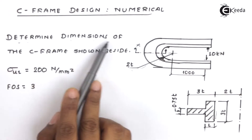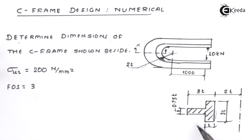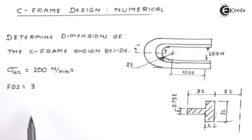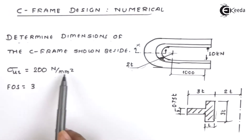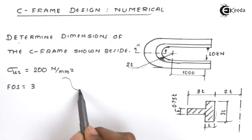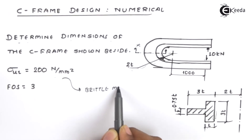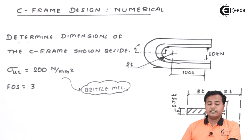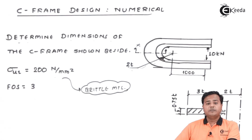The problem statement says to determine the dimensions of the C-frame shown. All the dimensions are parametric — they are in terms of t — so we need to find out the thickness t, which is sufficient to completely define the dimensions of the C-frame. The material property given is ultimate stress of 200 Newton per millimeter square and factor of safety 3. A low value of ultimate stress indicates this material is brittle.